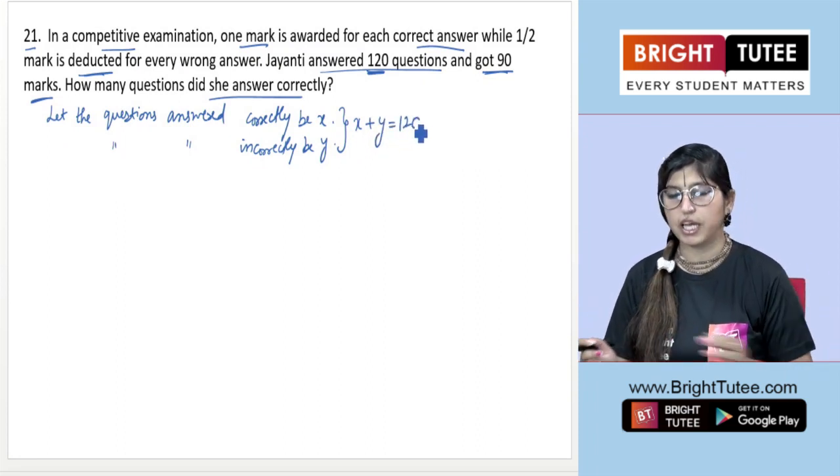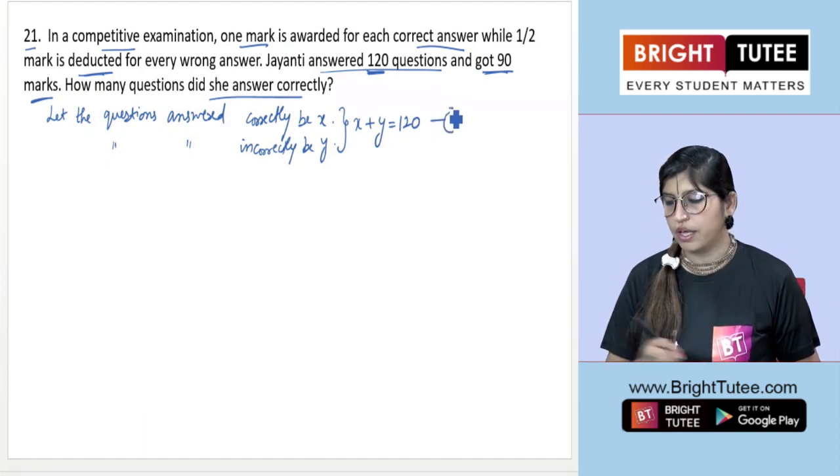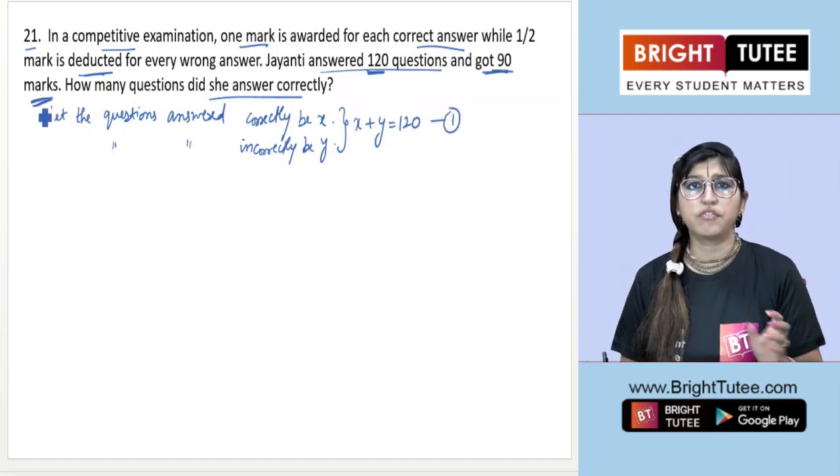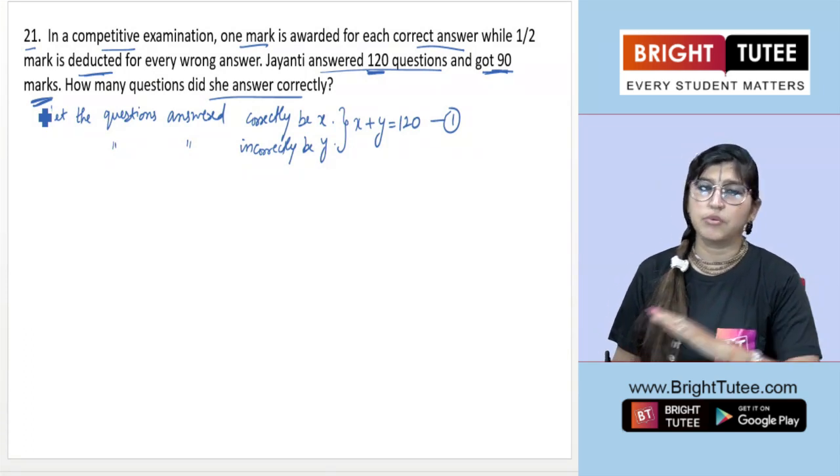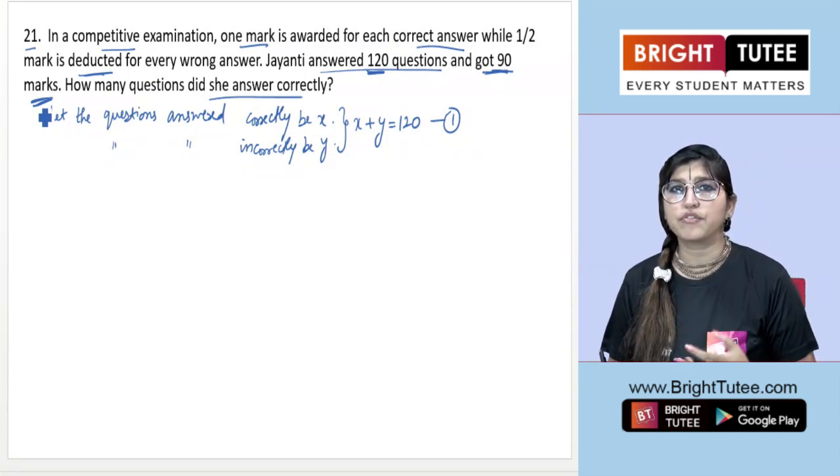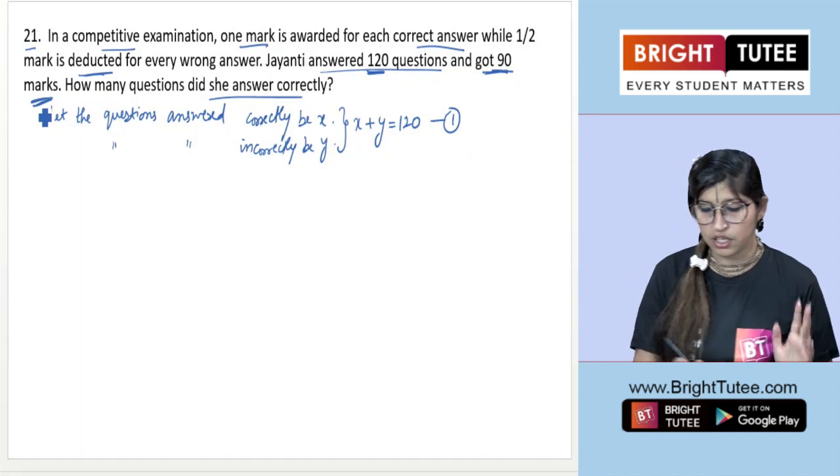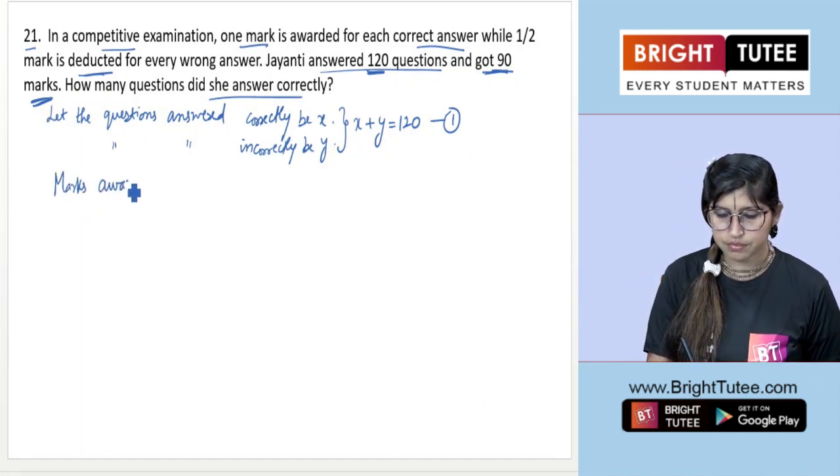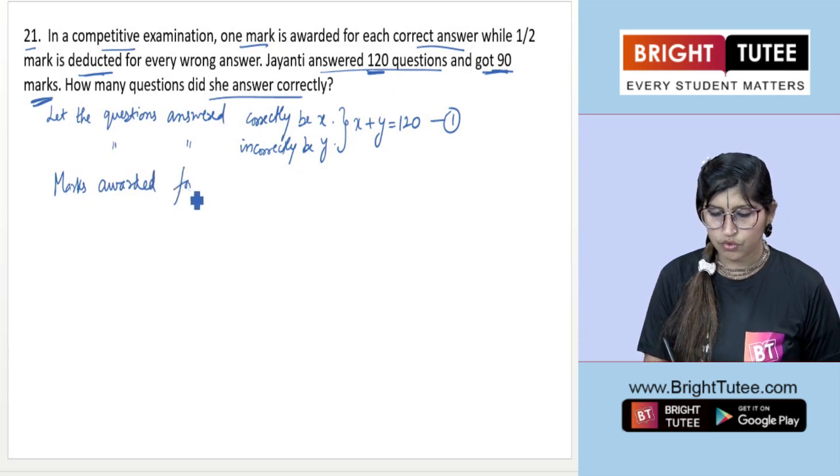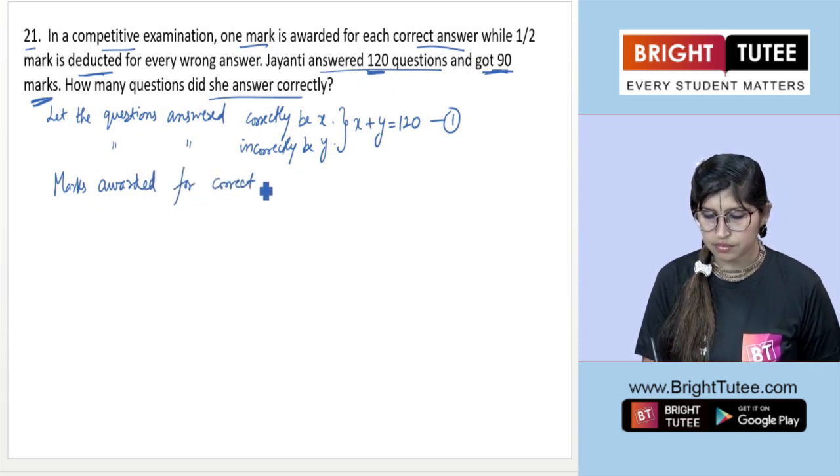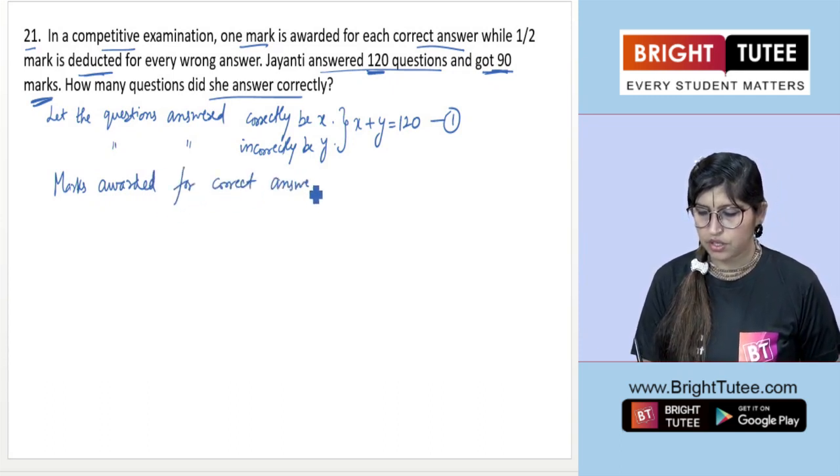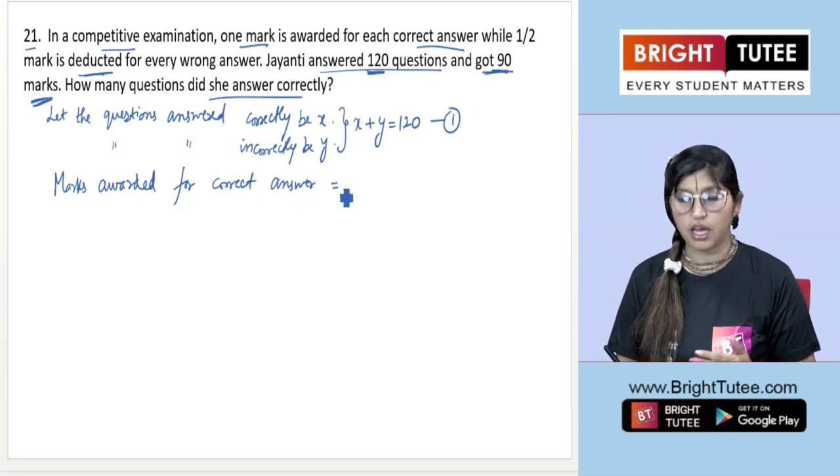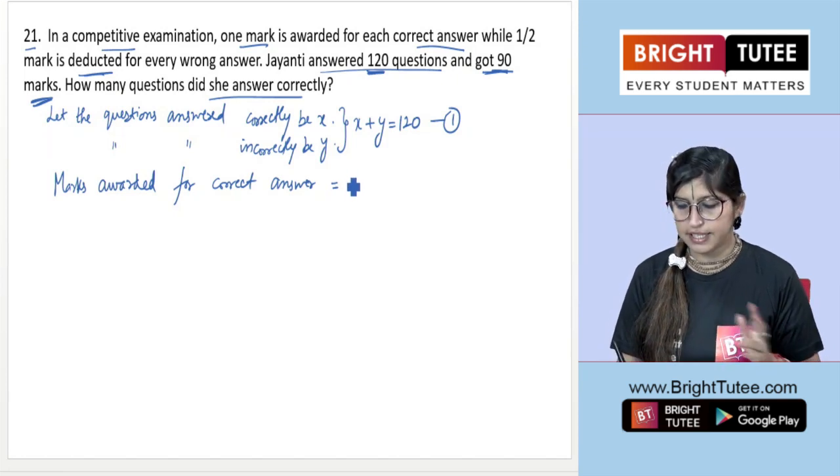Now it says she got 90 marks altogether. If we're equating it to 90 marks, we need to work on how many marks are awarded. For correct answers, one mark per question. How many questions did she answer correctly? That's x. So 1 times x, which is x marks awarded for correct answers.